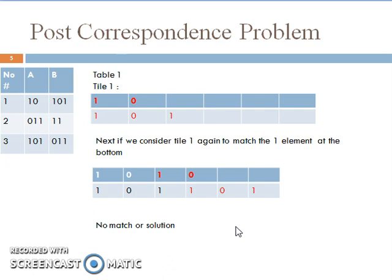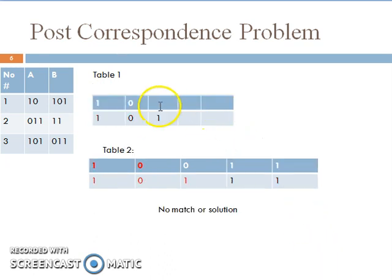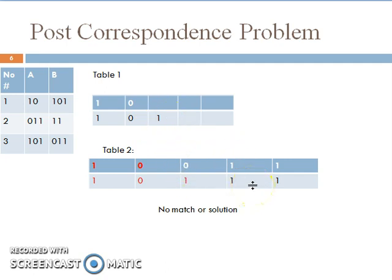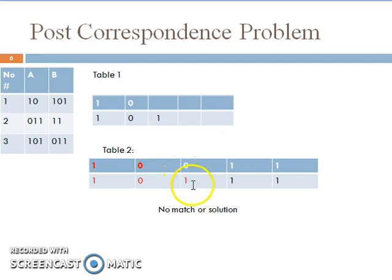We need to find another solution. Starting again with tile 1, we have 1 unmatched at the bottom. If we consider tile 2 for the second position, we find a mismatch at the third position: the 0 at the third position on the top does not match with the 1 at the third position on the bottom. So this also has no match or solution.